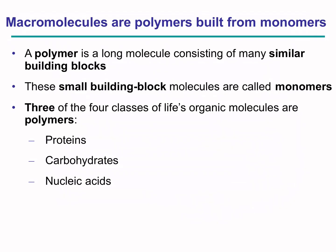All these molecules that are found in us — three exist mainly as polymers: proteins, carbohydrates, and nucleic acids. These polymers are made up of small building blocks which are called the monomers.